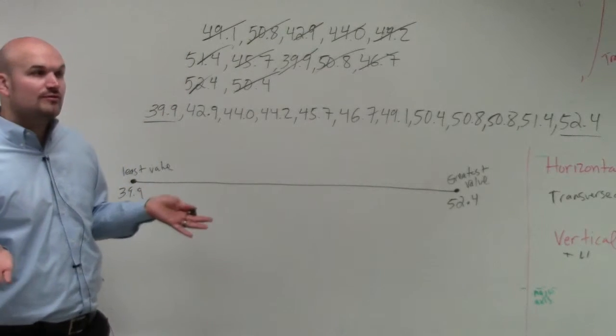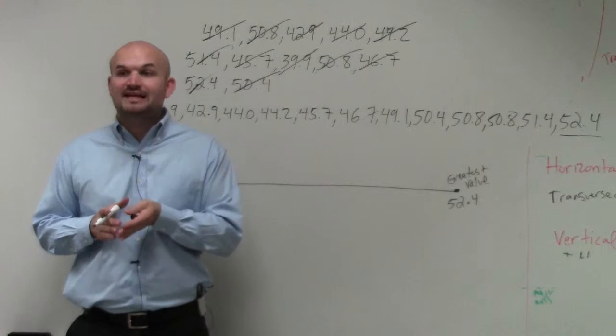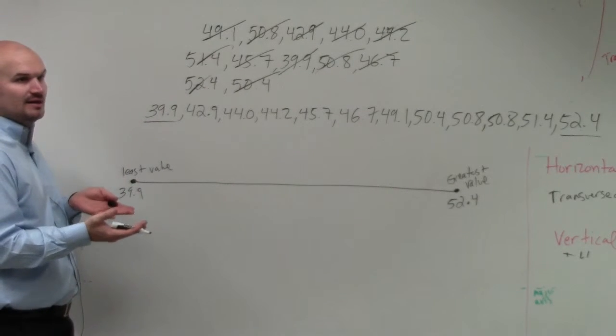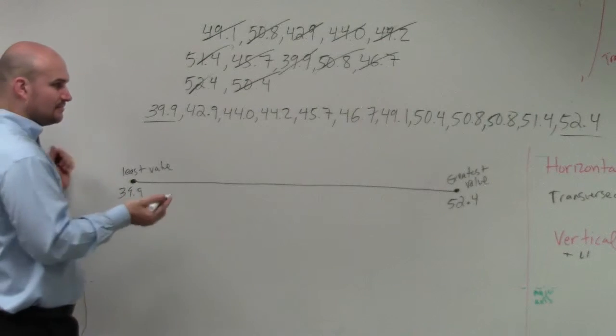Now, there's three quartiles that we're going to look at. Quartile two is the median of our data set. So remember, the median is going to be directly in the middle value when they're ordered.